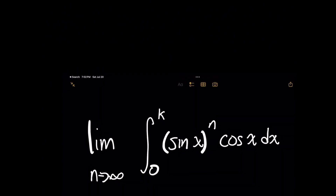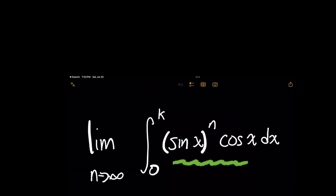For this problem, assume that the upper limit of integration k is a constant greater than 0. Recognize that in the integral expression itself, because you have both sine of x and cosine of x dx, it doesn't matter what this power of n is — either way we can use a trick known as the u-substitution method.